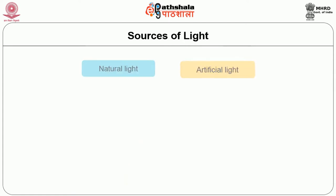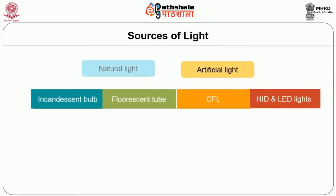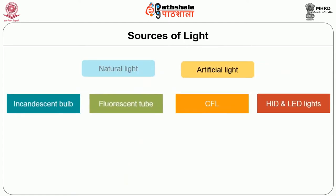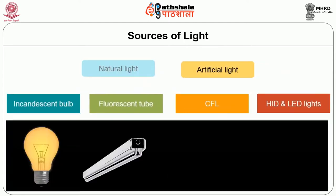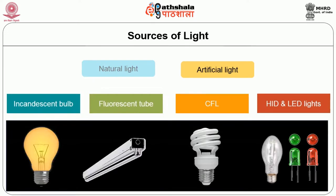Sources of artificial lighting: There are five common sources of artificial light. They are incandescent bulb, fluorescent tube, CFL bulbs, HID, and LED lights.